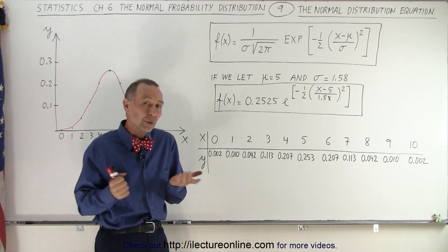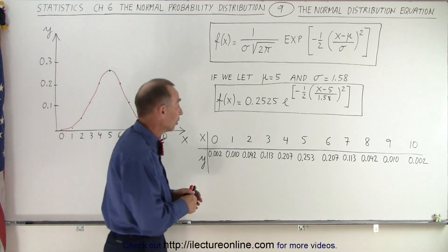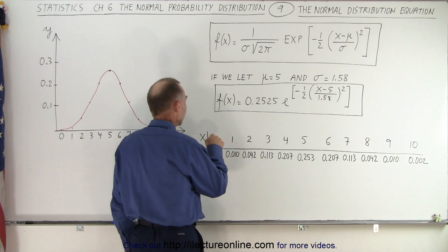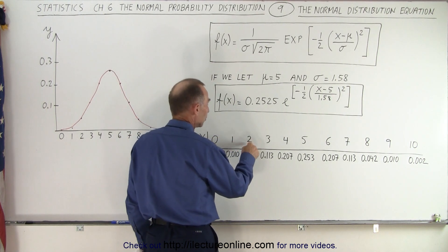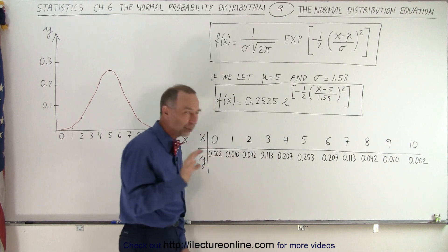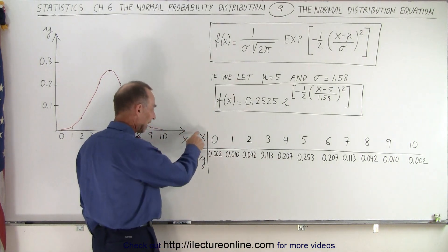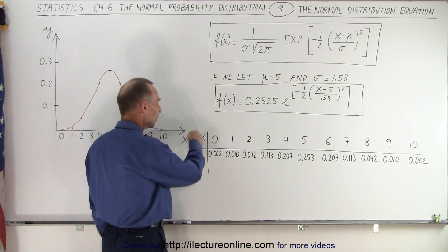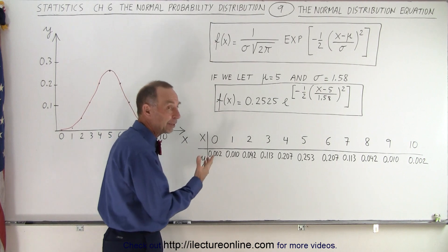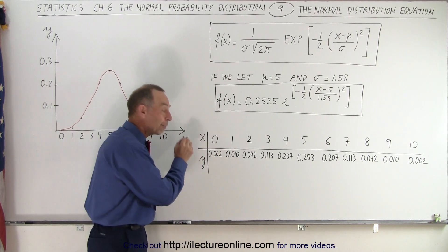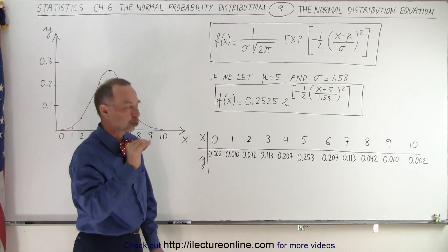So, what do you do with it? Well, you can now plug in values. Notice, we can plug in zero baskets made, one basket made, two baskets made, three baskets made, and so forth. Notice we changed the variables a little bit. We used x and y, x being the independent variable and y being the dependent variable. Y represents the probability of that event occurring.